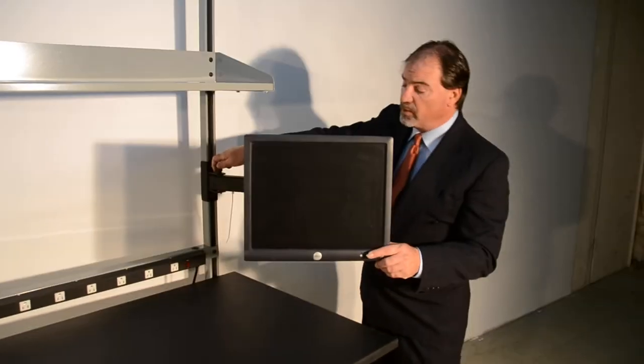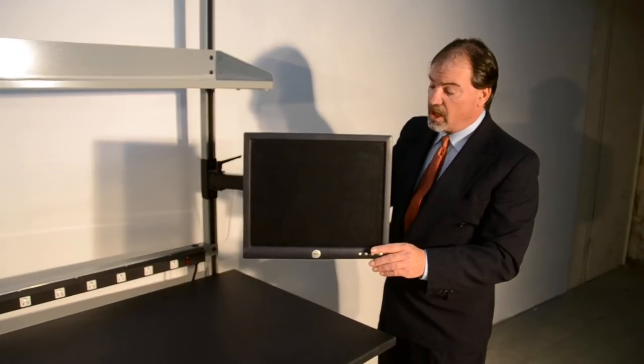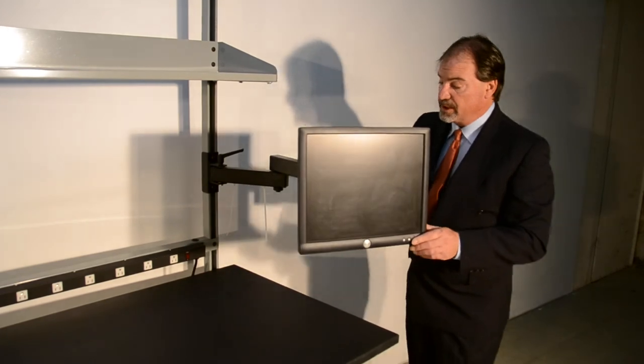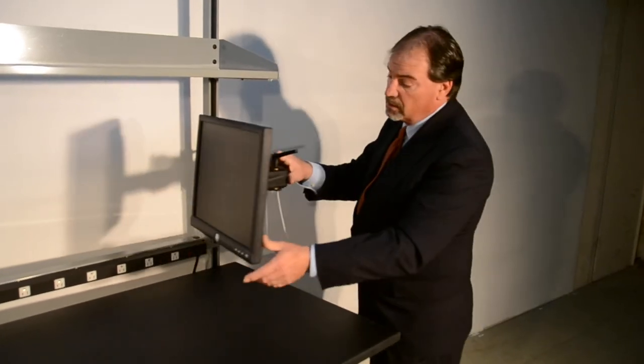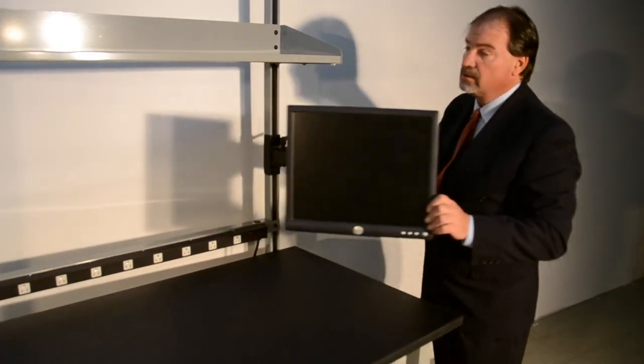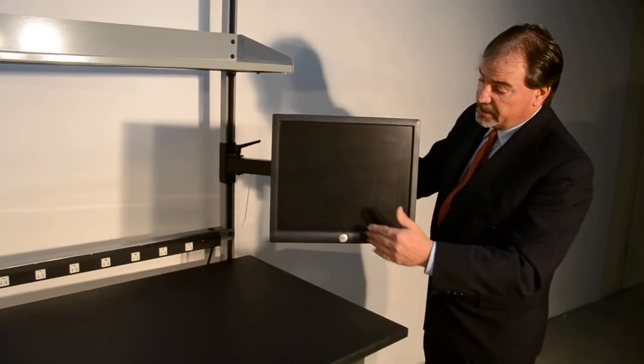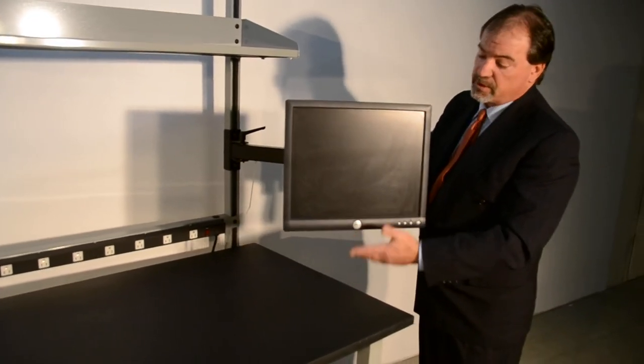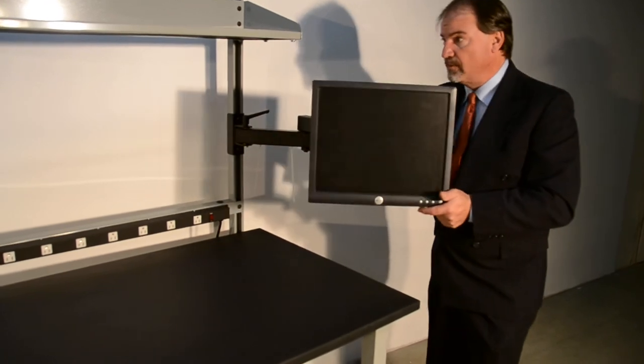Once the operator has it to a point that they want it, they just tighten the knobs. You can also adjust the tilt on this as well by adjusting this handle here. It might have a little bit of overhead light and you need to get glare off the screen. We also have an optional keyboard tray that mounts off the bottom of this.